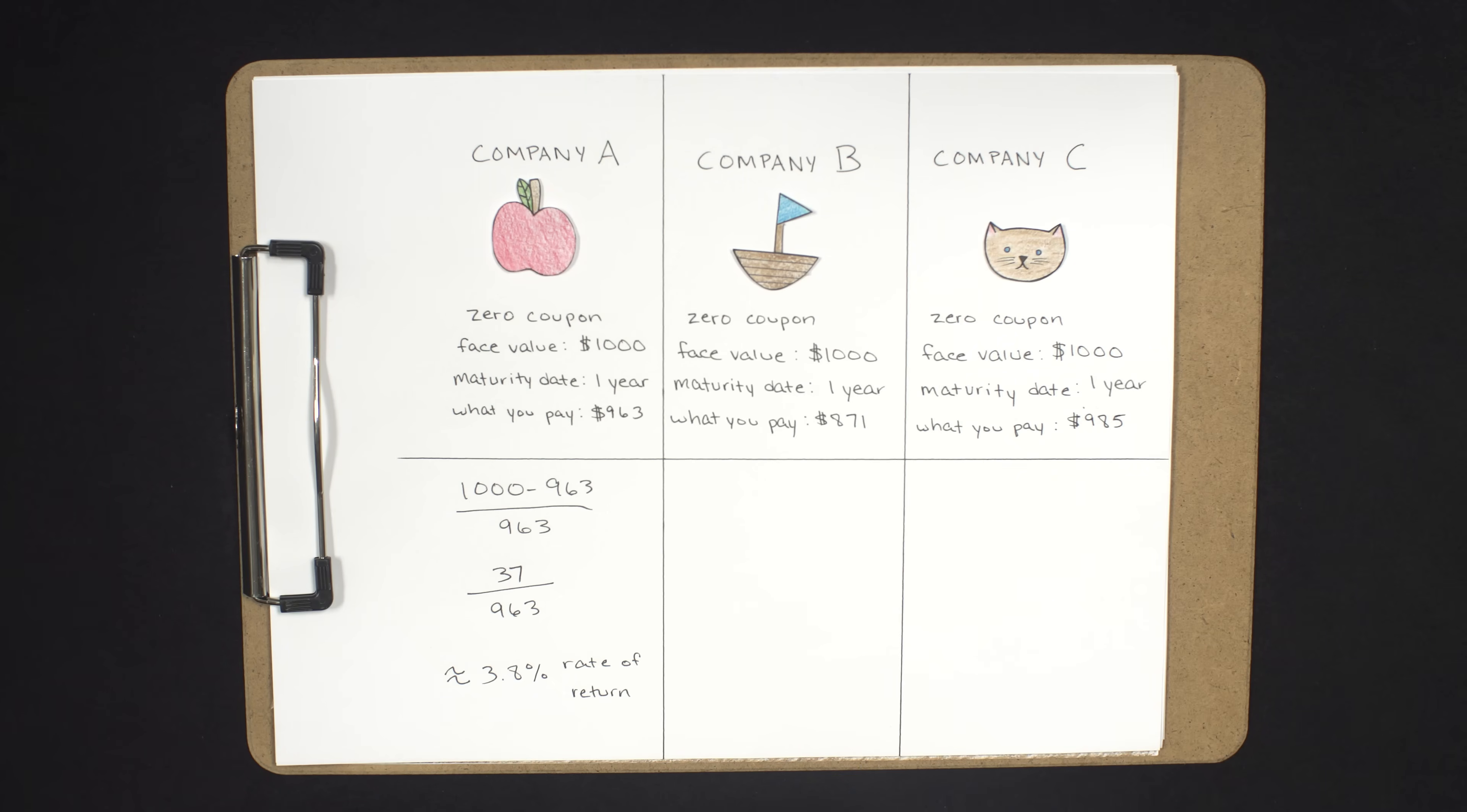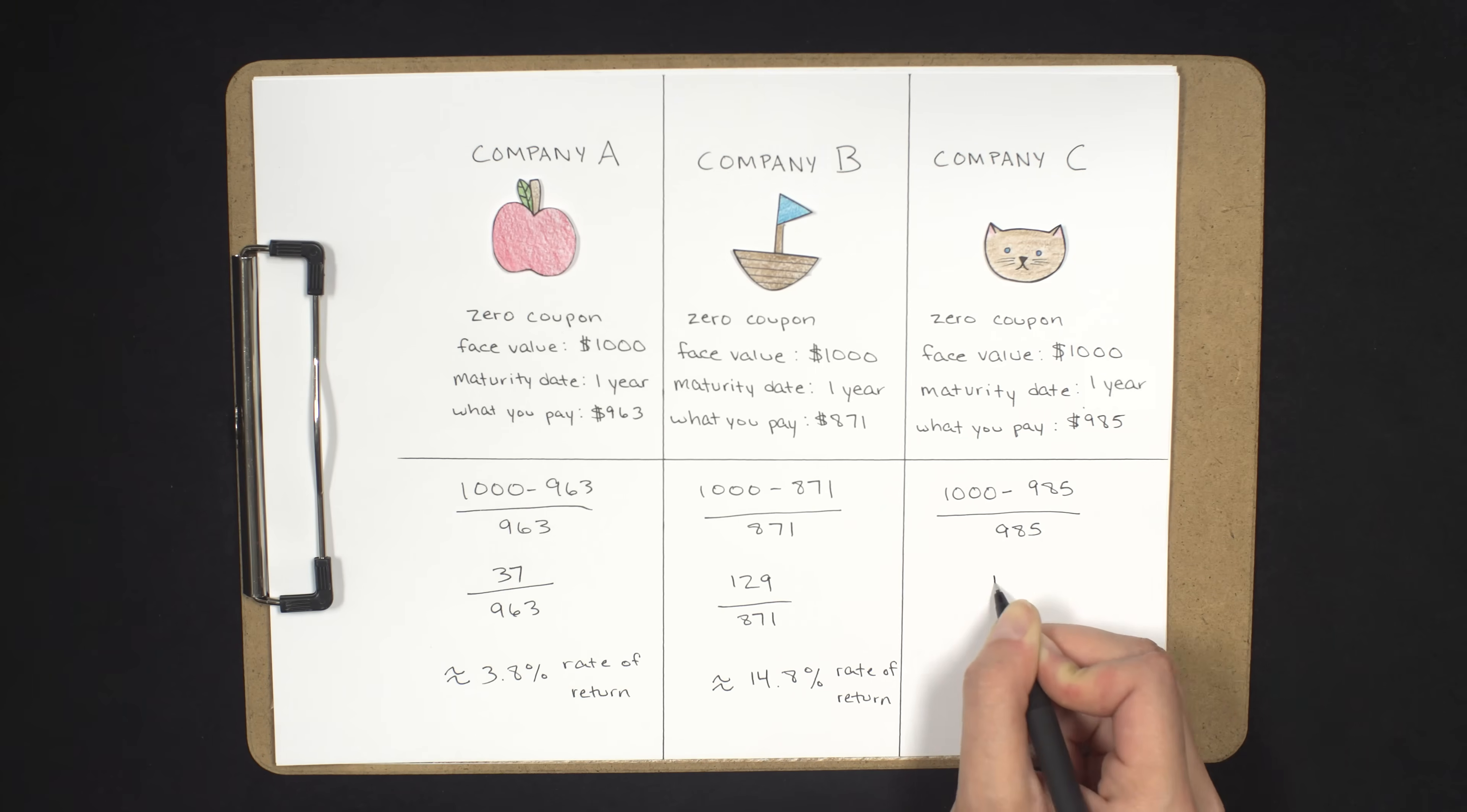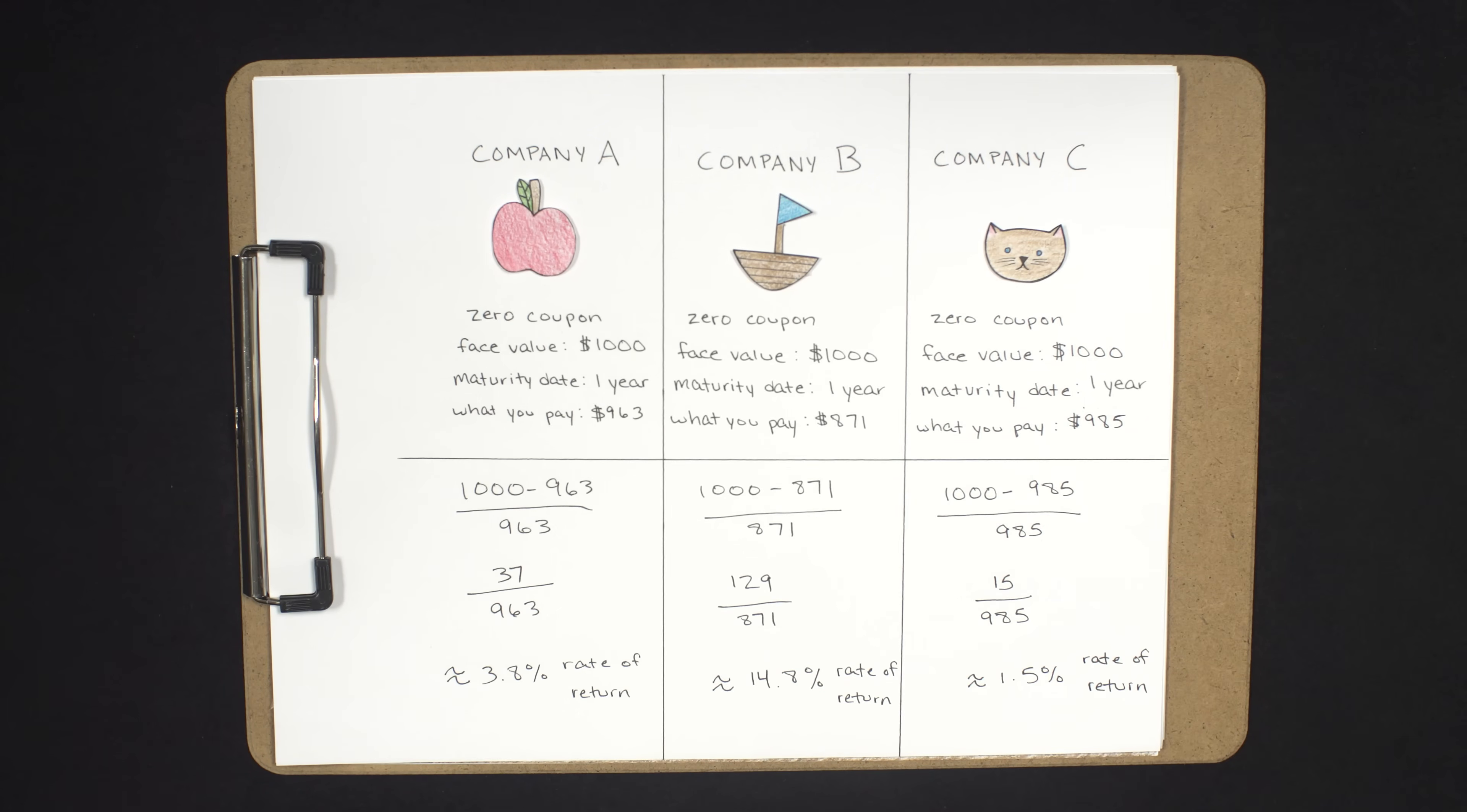Given that the other two bonds have the exact same characteristics, zero coupons and a one-year maturity date, we can speed through these calculations. Company B's bond rate of return is the investment gain, $129, divided by the initial investment, $871, for a rate of return of 14.8%. And finally, Company C's bond rate of return, a gain of $15, divided by $985, that initial investment, for a 1.5% rate of return.